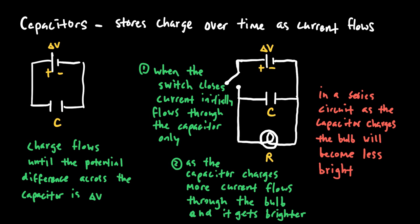The main new concept in AP Physics 2 circuits is putting capacitors in a circuit. A capacitor stores charge over time as current flows, making the circuit more dynamic. When you connect an uncharged capacitor to a battery with potential difference ΔV, charge begins to flow. A capacitor is essentially two plates separated by a distance, which actually prevents continuous charge flow — but the battery drives electrons toward one plate, and positive charge accumulates on the other.